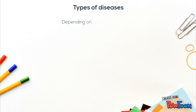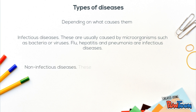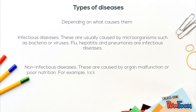We can also classify diseases depending on what causes them. For example, infectious diseases are usually caused by microorganisms such as bacteria or viruses. Flu, hepatitis, and pneumonia are infectious diseases. Non-infectious diseases are caused by organ malfunction or poor nutrition — for example, lack of vitamin D can cause a disease called rickets.